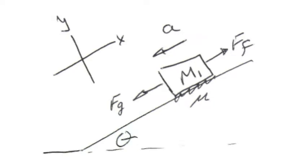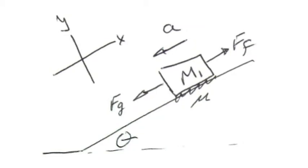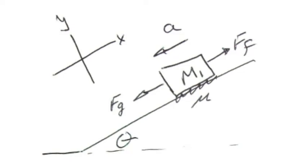This is the mass on the incline problem. We've got M sitting on an incline at an angle theta from the horizontal. Gravity will pull that mass down the incline, and we want to find the acceleration rate of that mass as it slides down the incline.